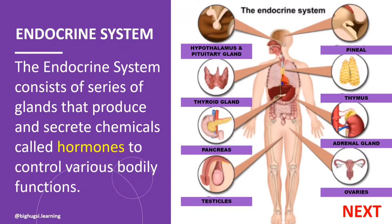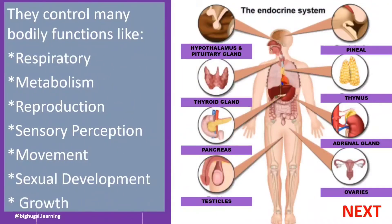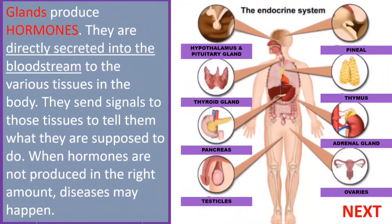The endocrine system consists of a series of glands that produce and secrete chemicals called hormones to control various bodily functions. Hormones are made up of proteins. They control many bodily functions like respiratory, metabolism, reproduction, sensory perception, movement, sexual development, and growth. Glands produce hormones. They are directly secreted into the bloodstream to various tissues in the body, sending signals to those tissues to tell them what they are supposed to do. When hormones are not produced in the right amount, diseases may happen.